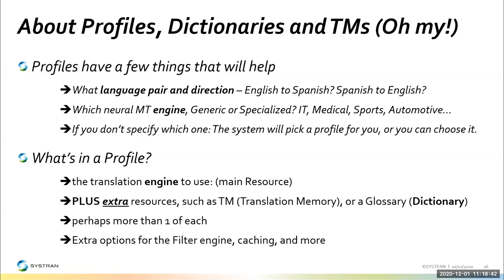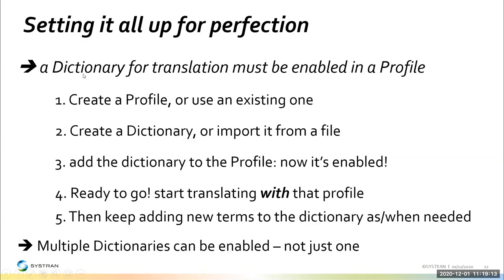There are also different sizes — medium and large categories. They cost more but produce better translations. If you let the system find one, it will look for larger and non-generic engines first. In the profile, there's a lot of decision-making happening. Setting it up for perfection is something you do once. You already probably have a profile — you could add dictionaries to it. We recommend starting with one new profile: pick an existing engine and then start adding a dictionary.